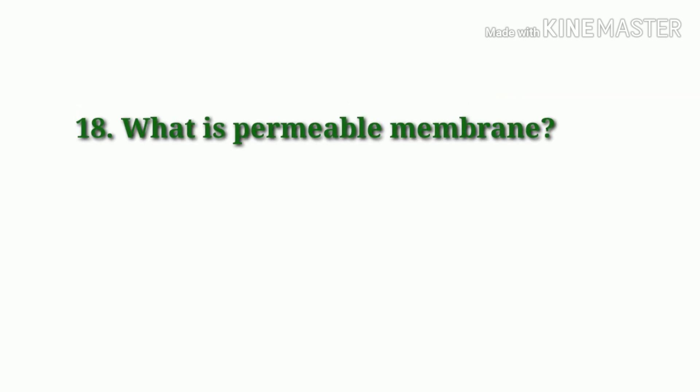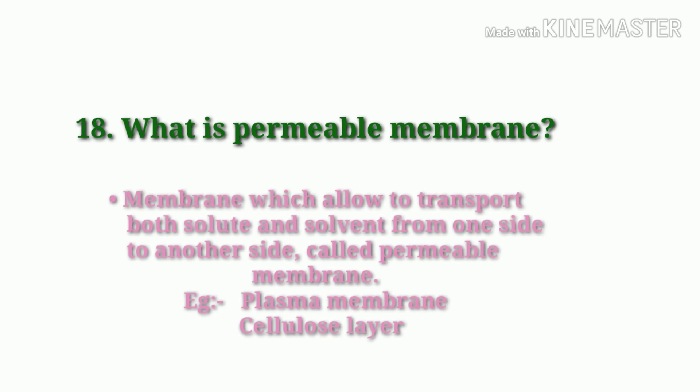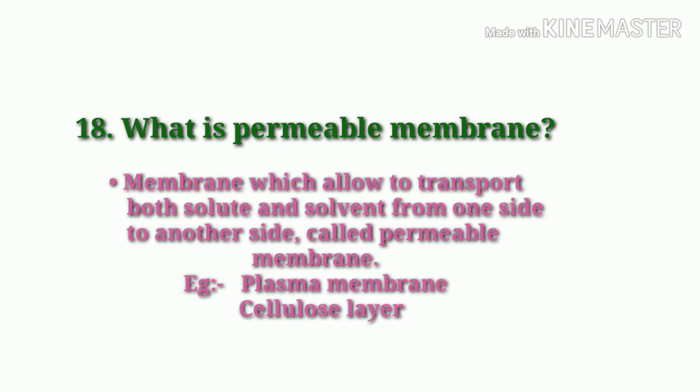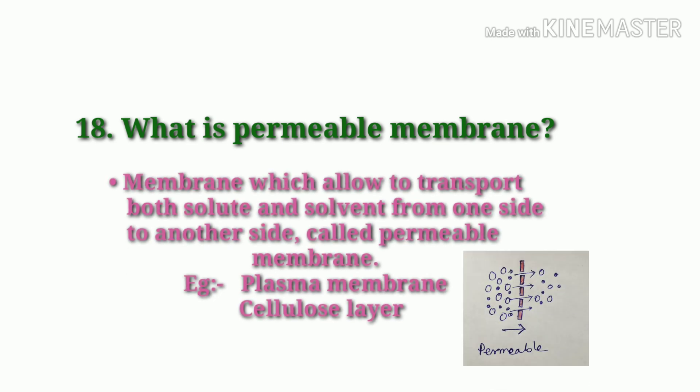What is a permeable membrane? A membrane which allows transport of both solute and solvent from one side to another side is called a permeable membrane. Examples: plasma membrane and cellulose layer.